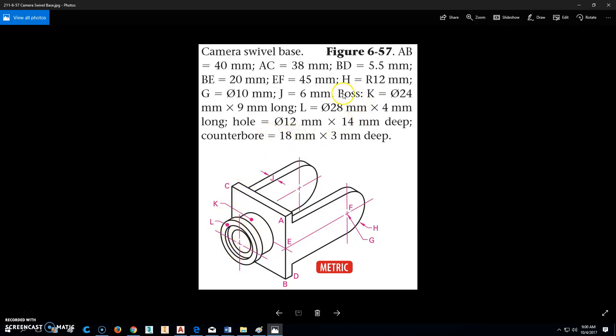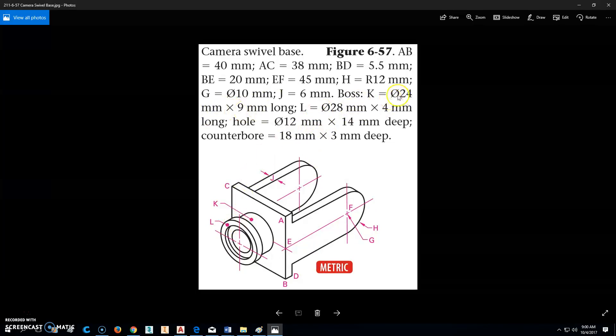You should also notice that it says here the boss is K, which is this whole part that's sticking out of the end. And K, or L, is 4 millimeters deep, but the entire thing here, or this 24, behind L from the backside of this to there is 9 millimeters long.